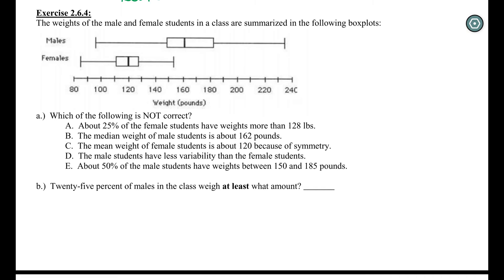First one says about 25% of the female students have weights more than 128. So we're talking about the female students. We want to talk about greater than 128. So it looks like they're talking about this value. And then 25% weigh more than that. So they're just telling us that this is 25%, which it is. Remember each portion of the boxplot is 25%. We're using that five number summary, which divides our data up into quarters. So this is correct, which means it is not our answer because we're looking for something that's not correct.